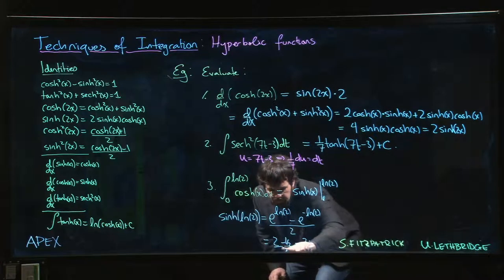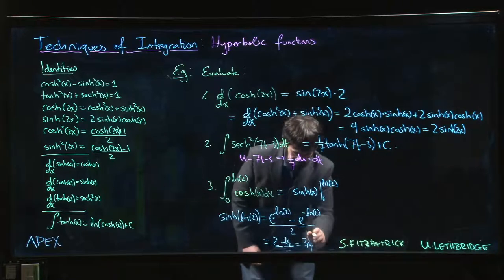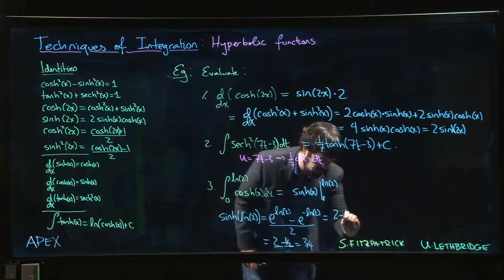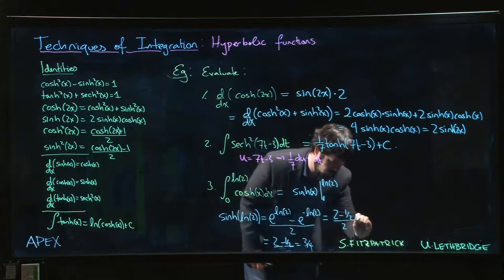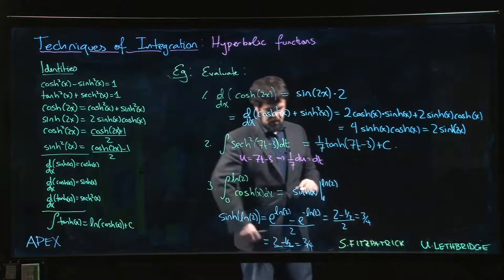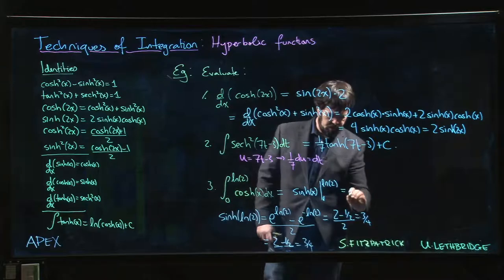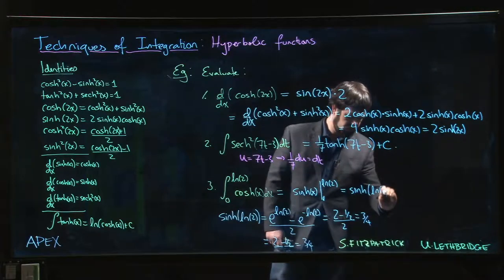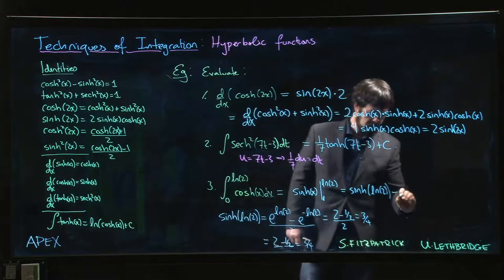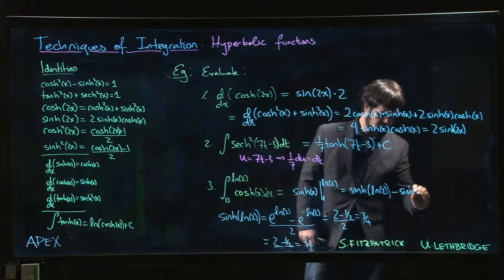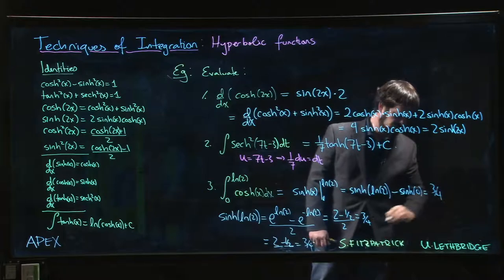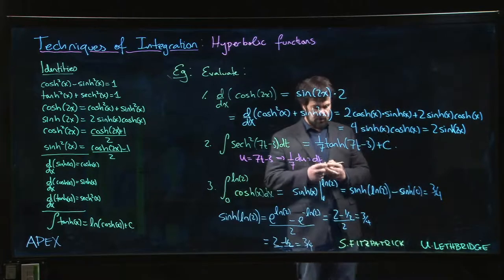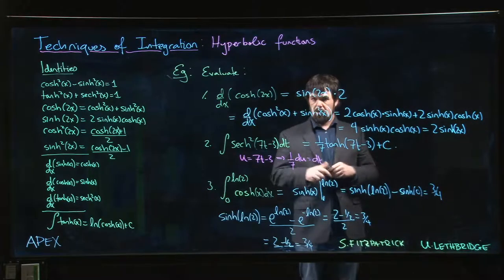Sorry about that—there's a 2 on the bottom here you probably can't see; let me put it here. So this is sinh(log 2) - sinh(0), which is just 3/4. 3/4 minus 0, we get 3/4. All right.